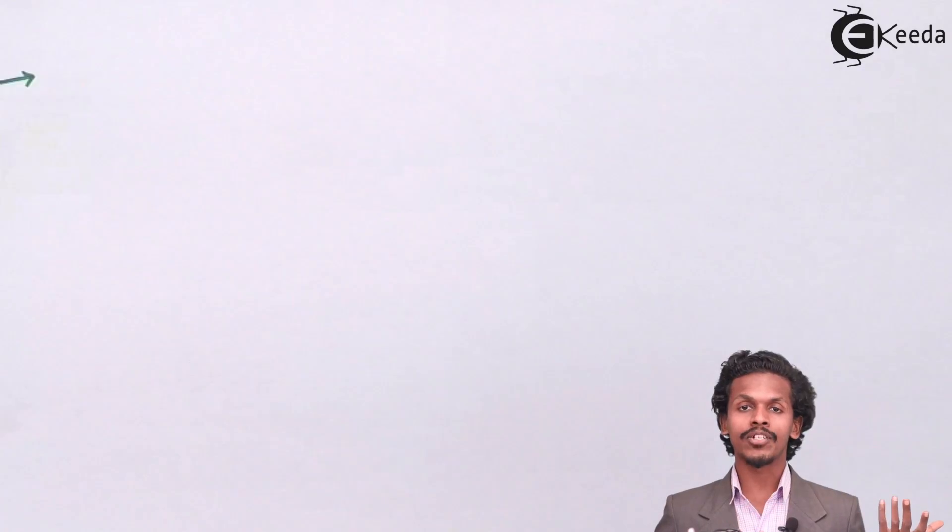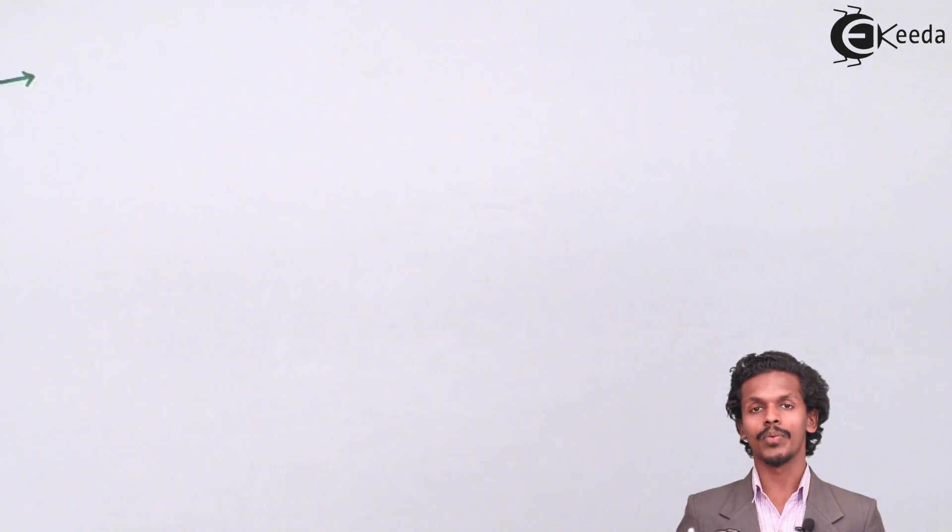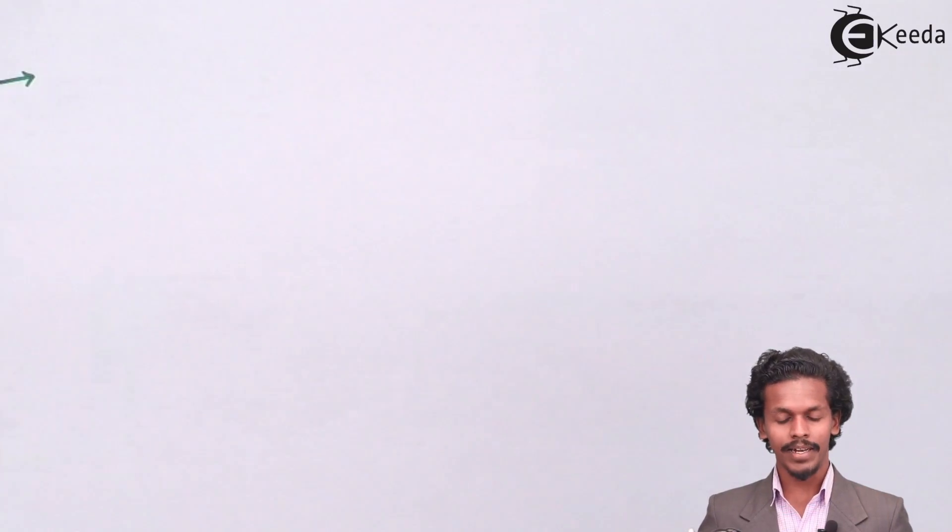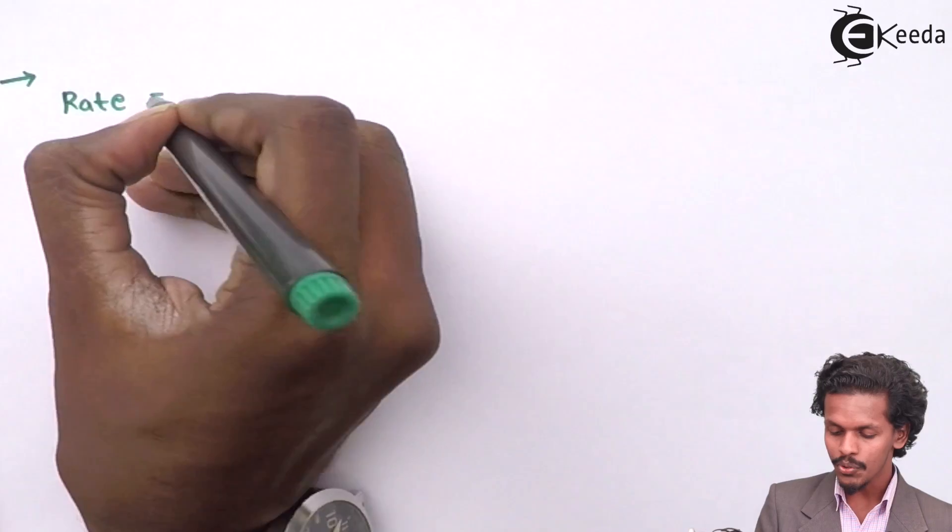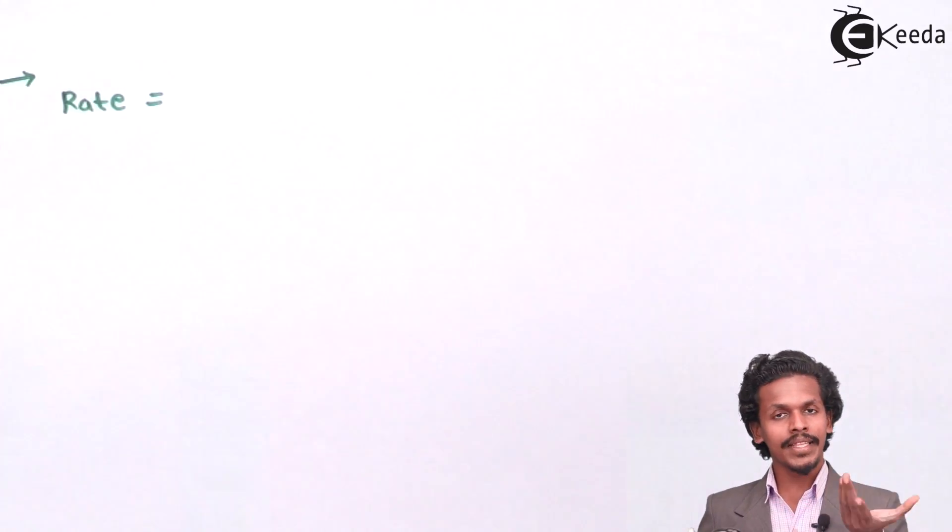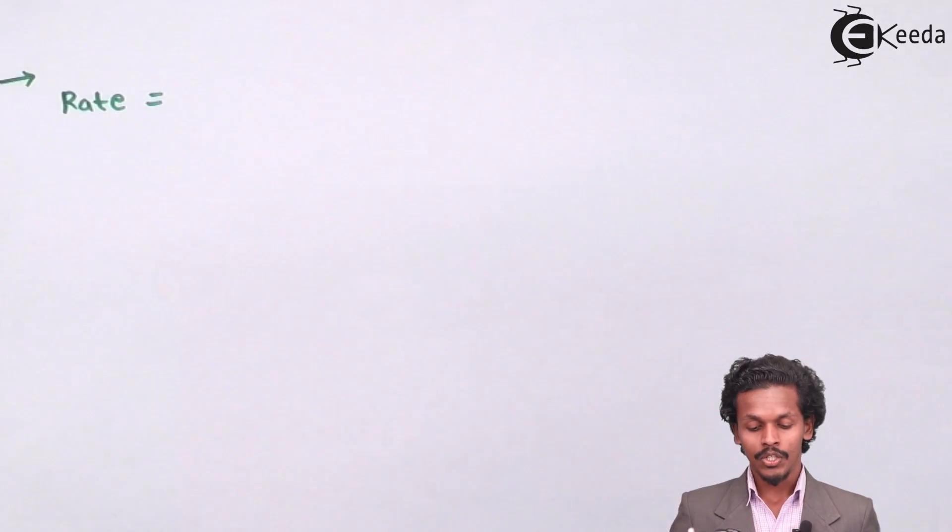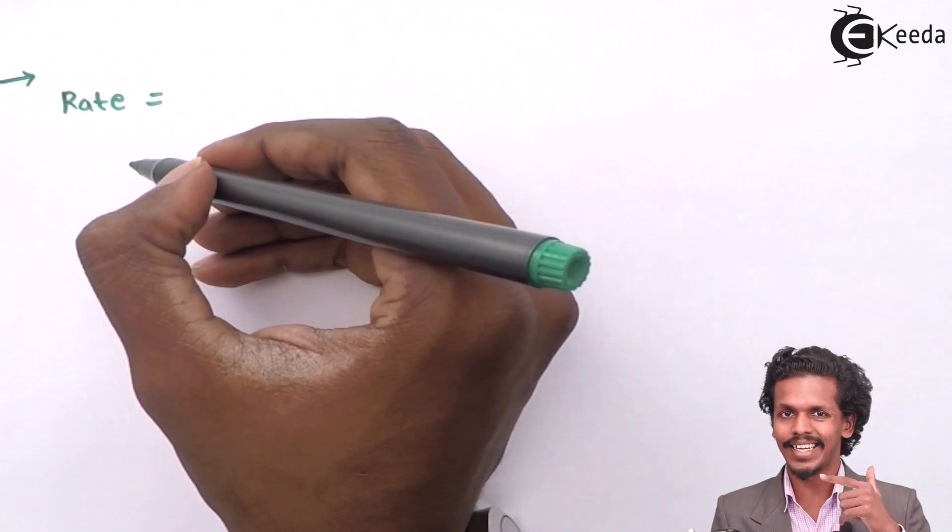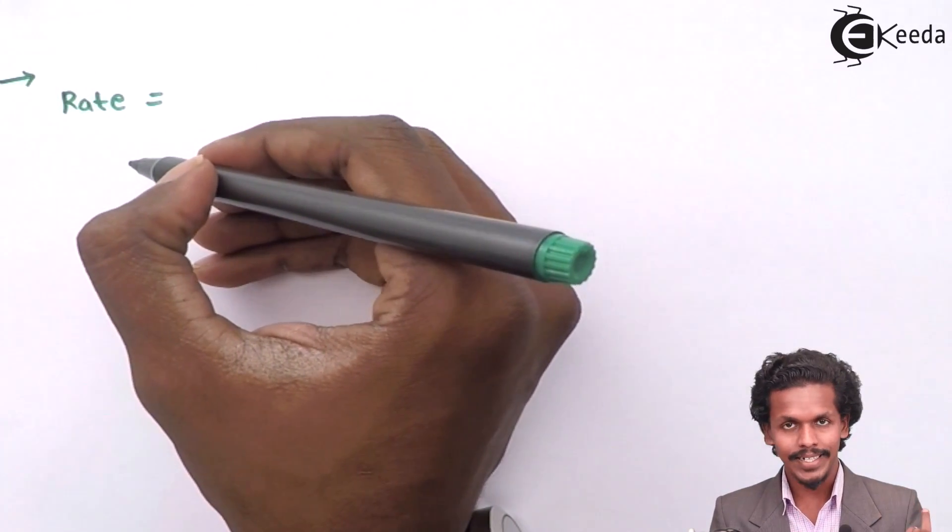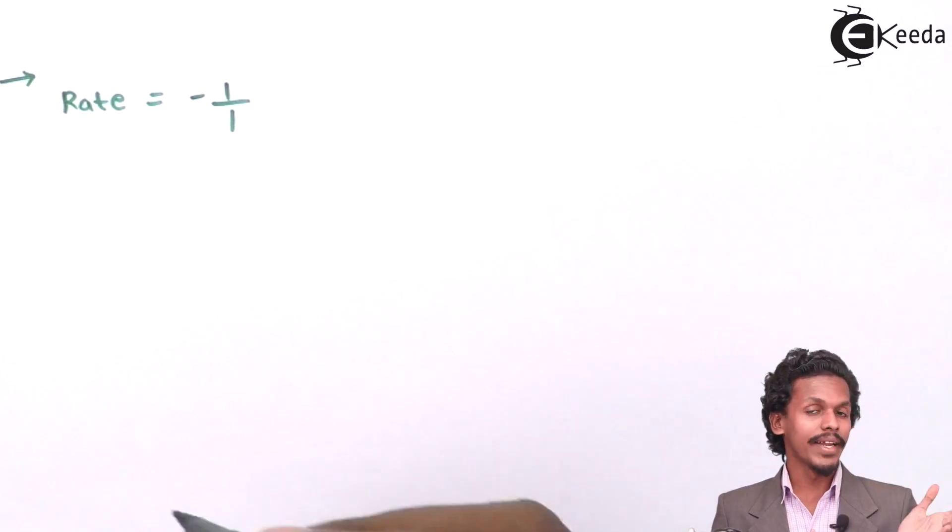We can calculate the rate of reaction or we could represent the rate of reaction for a particular one by this manner. Rate is equal to, we will start with the reactants and we will equate each reactant with each product. So therefore the chloroform which has a stoichiometry of only one will be the reciprocal that is one itself. But it will be minus.